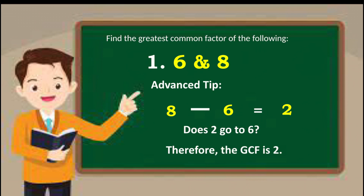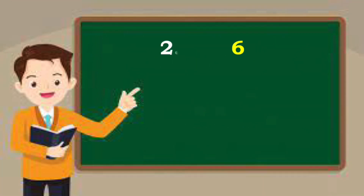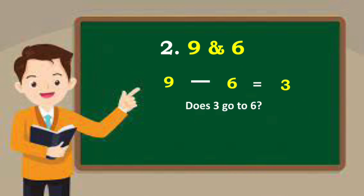Find the GCF of 9 and 6. Subtract: 9 minus 6 is equal to 3. Does 3 go into 6? Yes. So the GCF is 3.